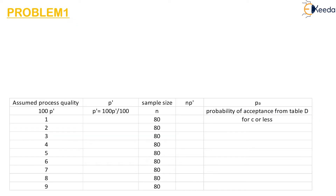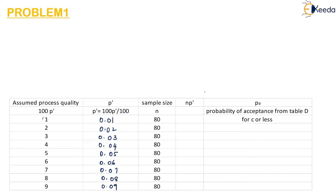I have drawn a table here. We have assumed that the process quality is varying from 1 to 9, so the percent defective values are 1, 2, 3 till 9. The P' value, that is 100% defective divided by 100, will give us 0.01, 0.02, 0.03, 0.04, 0.05, 0.06, 0.07, 0.08 and 0.09. The n value, that is the sample size, is 80 for all values.